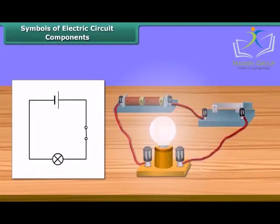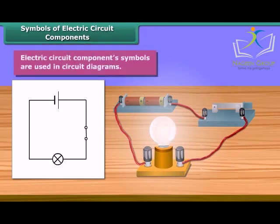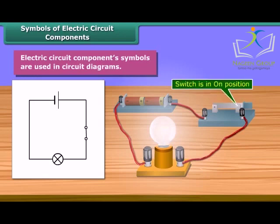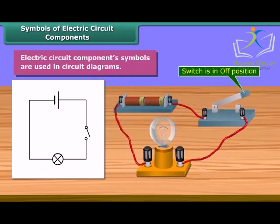Electric circuit component symbols are used to make circuit diagrams. It is much easier to represent a circuit diagram using symbols. This is the symbol of a switch in the on position; this one is in the off position.